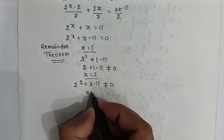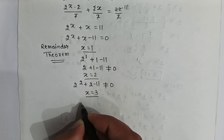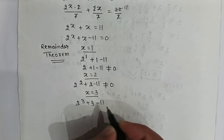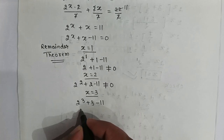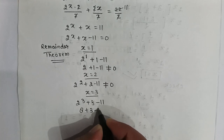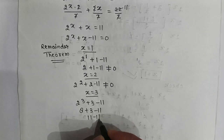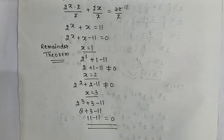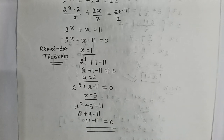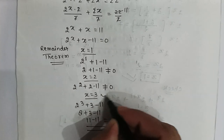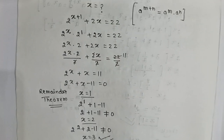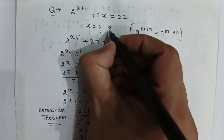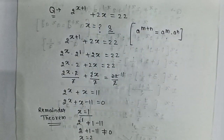If we put x equal to 3, then it will be 2 to the power 3 plus 3 minus 11, which is 8 plus 3 minus 11, that is 11 minus 11, which is equal to 0. So the value of x is 3. Hence, the value of x is 3. Thank you, friends.